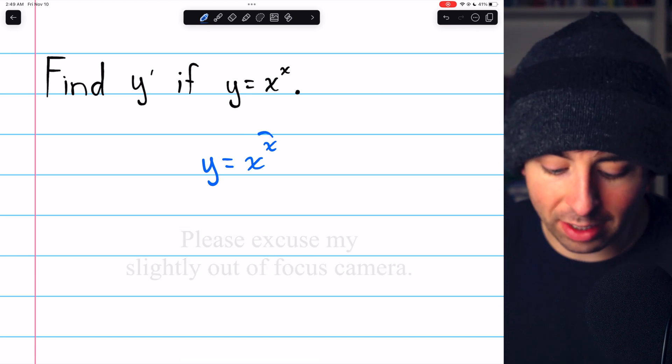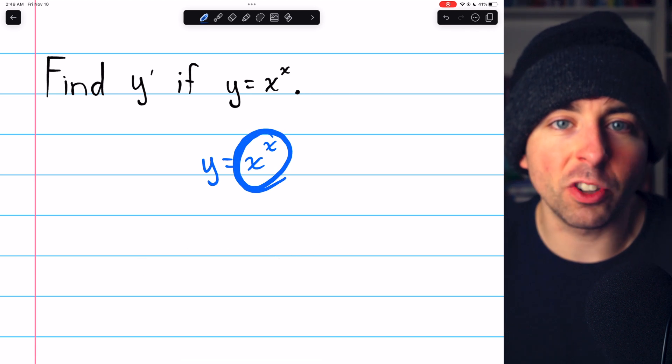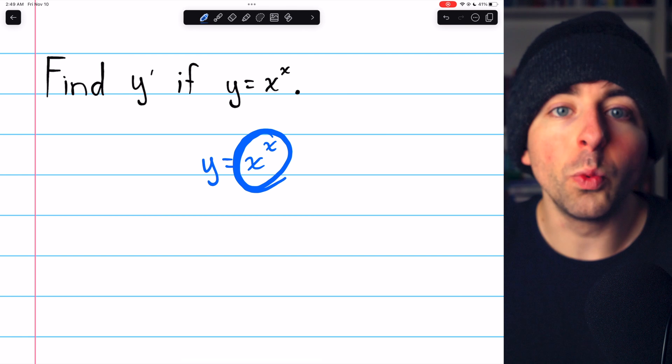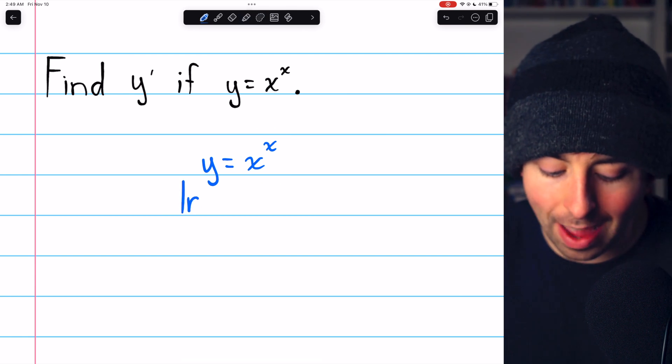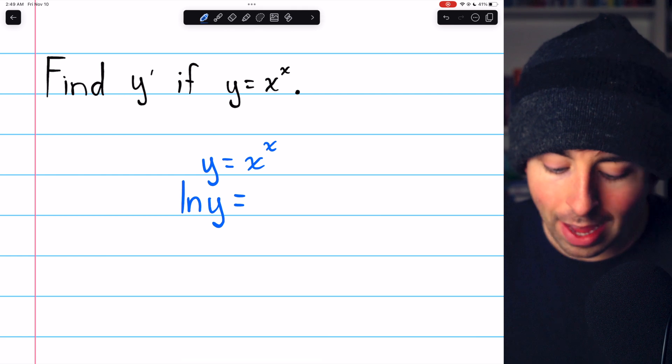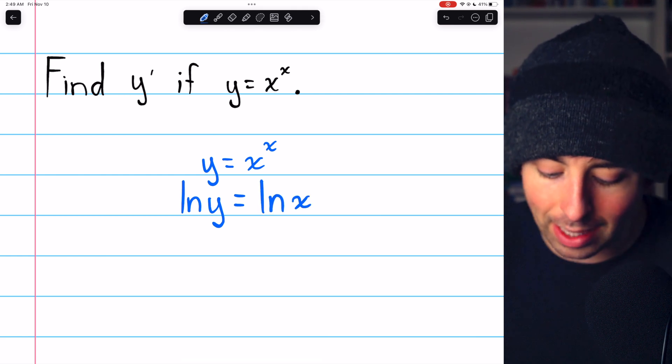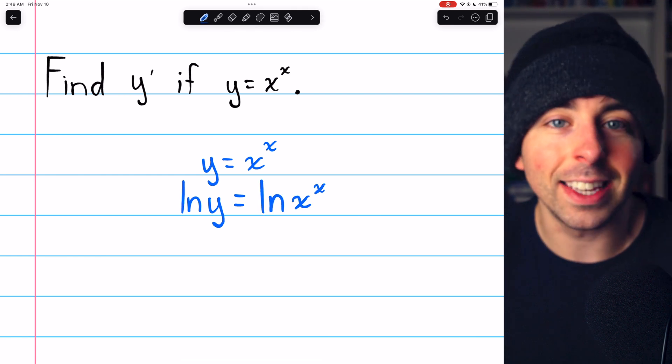But to turn this troublesome exponentiation into multiplication, we can take the log of both sides. So we'll take the log on the left, giving us log y, and we'll take the log on the right, giving us log x to the x.